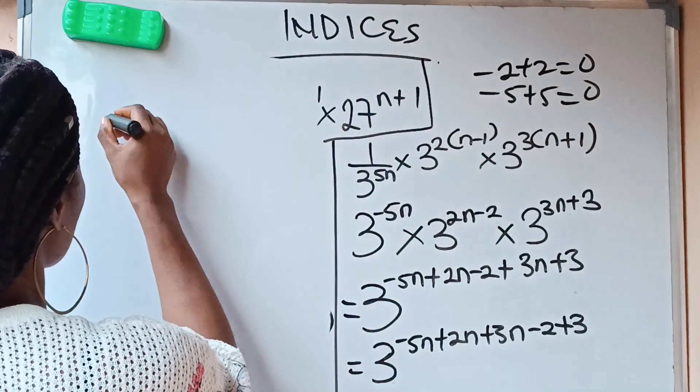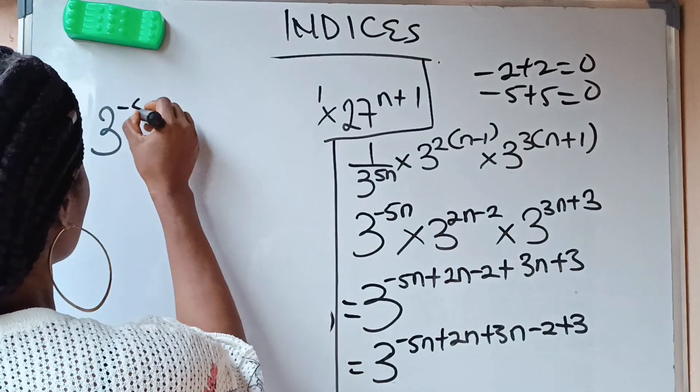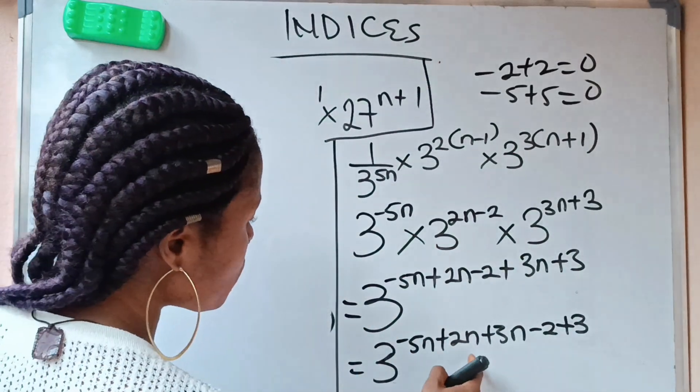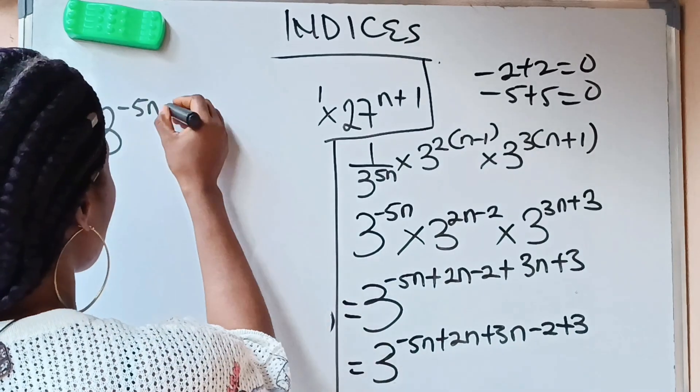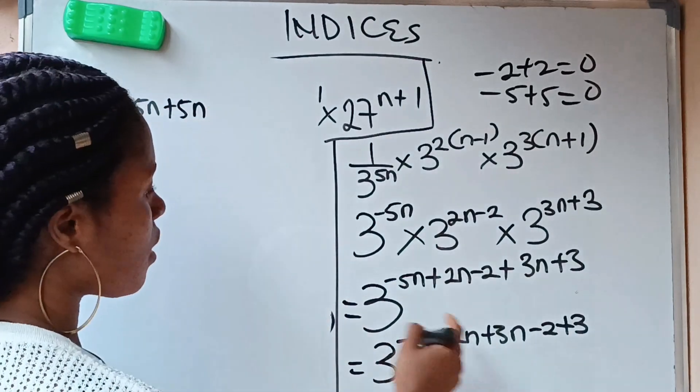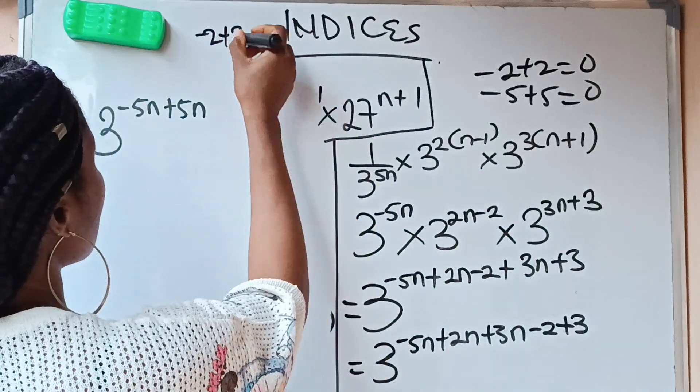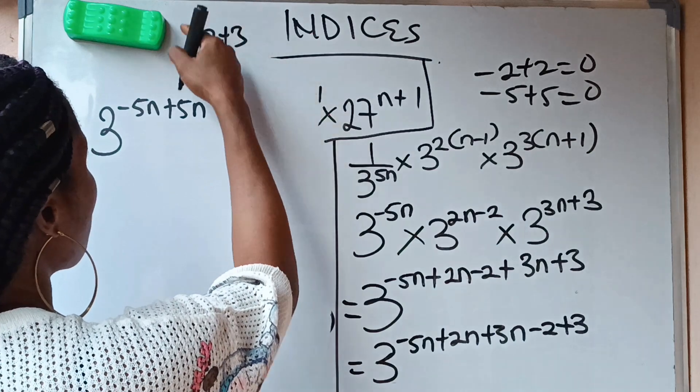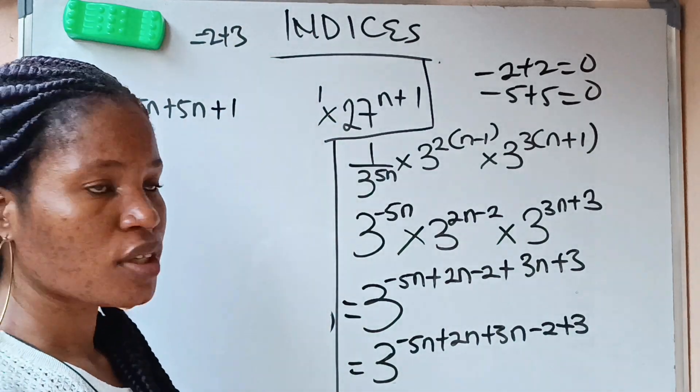Let's solve it now. So we have 3, minus 5n plus 2n plus 3n. That is 2n plus 3n will give us 5n. Minus 2 plus 3 will give us 1, because minus 2 plus 3 is same as 3 minus 2, which is 1. So it's going to be plus 1.